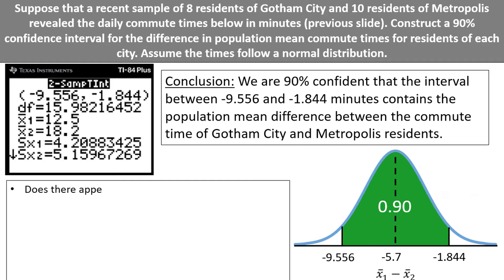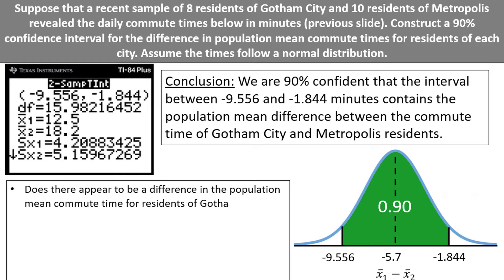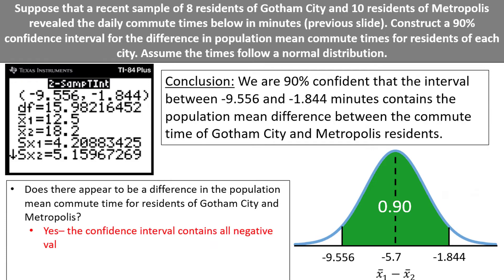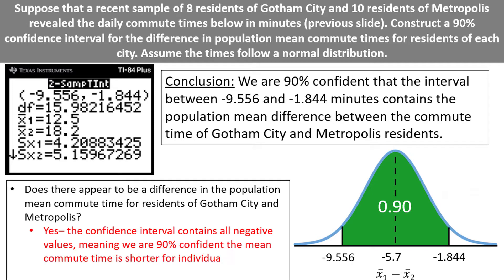Does there appear to be a difference in the population mean commute time for residents of Gotham City and Metropolis? Yes. The confidence interval contains all negative values, meaning we are 90% confident the mean commute time is shorter for individuals in Gotham City than it is for individuals in Metropolis.